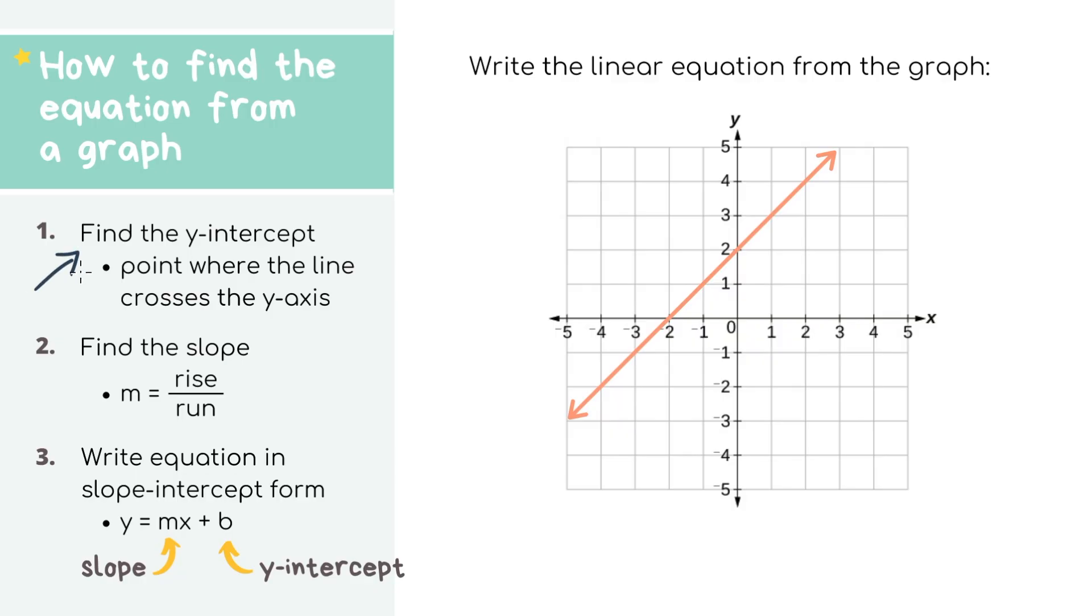Step one is to find the y-intercept, which is where our line crosses the y-axis, the axis that goes up and down. For this graph, that point is at zero, two. That means our y-intercept, or b-value, equals two.